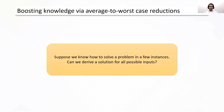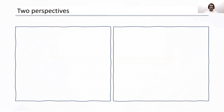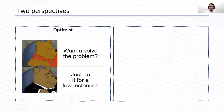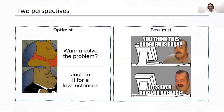The problem we are thinking about in this work is the problem of boosting knowledge by average to worst case reductions. In particular, we want to know that given a solution that only works for a few instances of possible inputs, can we derive a solution that works on all possible inputs? There are usually two perspectives about this type of reductions. The optimist perspective thinks that if you want to solve a problem, maybe it's easier to solve it just for a few instances, and maybe that gives us some hope to give a solution using this kind of reductions. And there's also a pessimist perspective that says that this type of problem should be very hard to solve because it's even hard to solve on a tiny fraction of possible inputs.